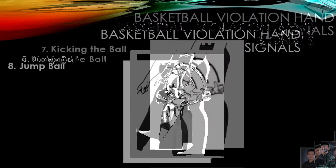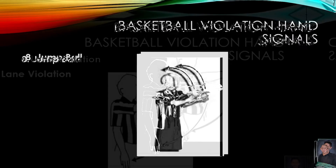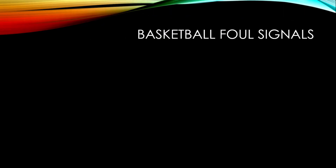The next one is the jump ball. When an offensive player and a defensive player gain possession of the ball at the same time, the referee will blow the whistle. Number nine is the lane violation. If a player is shooting a free throw and a lane violation occurs, the referee will signal it by raising one of his arms out to his side and holding it there until the free throw is completed.